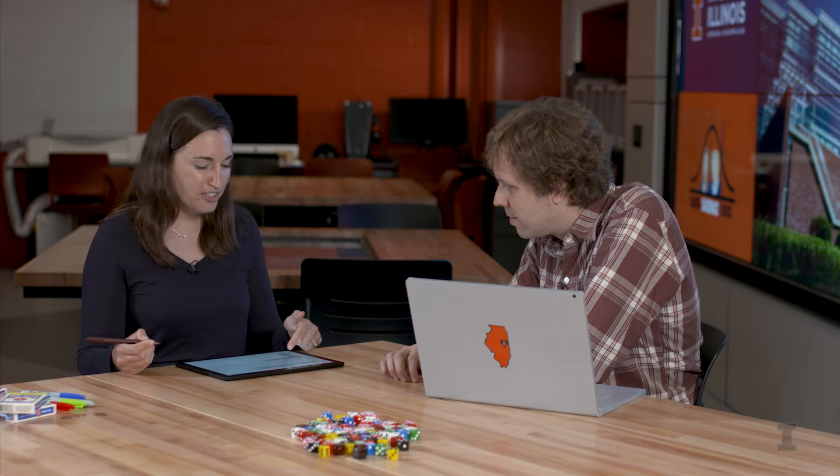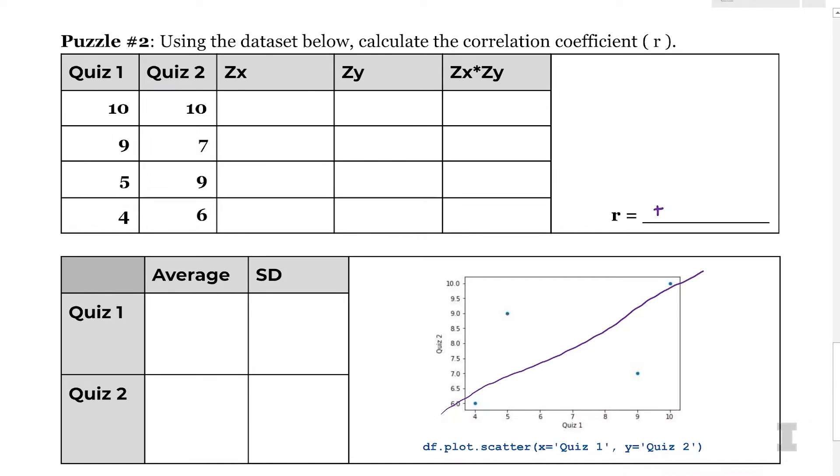So, Wade, can you calculate a few quick statistics for me? Of course. So I need the average and the SD of quiz one and quiz two. So what are the quiz one scores? So quiz one is 10, 9, 5, and 4. All right, so the quiz one, you want the mean? Yep, the mean and standard deviation. So the average is 7. 7, and what about the standard deviation? 2.94. 2.94, and then let's do the same thing for quiz two. So for quiz two, we have 10, 7, 9, and 6. Average is 8, and the standard deviation is 1.83. 1.83. So we have the average and standard deviation, and we have our scatter plot.